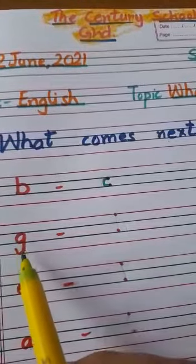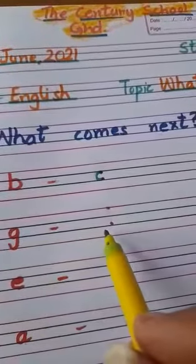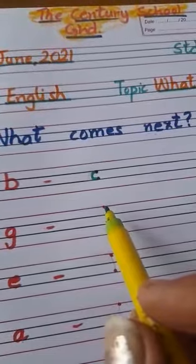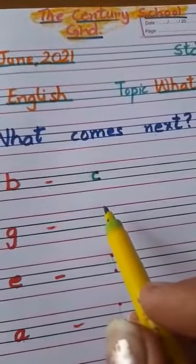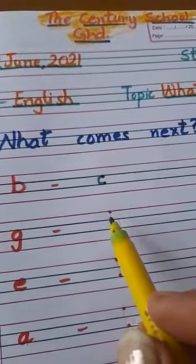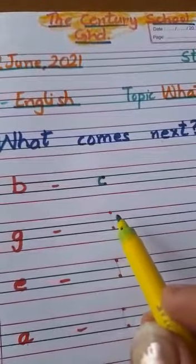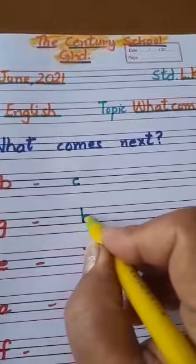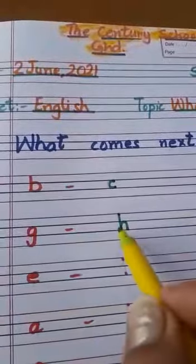This is small letter G. What comes after G? We will speak: A, B, C, D, E, F, G, H. H comes after G. So we will write here — H. G, H.